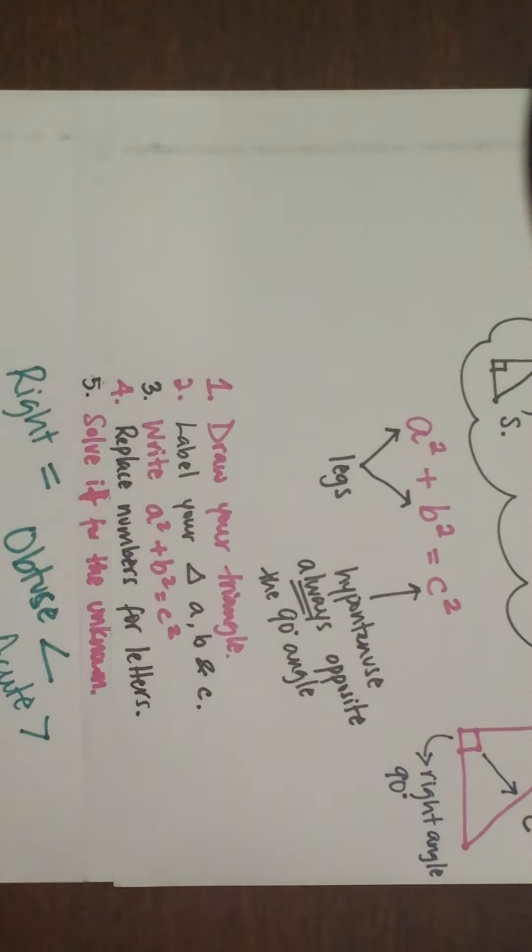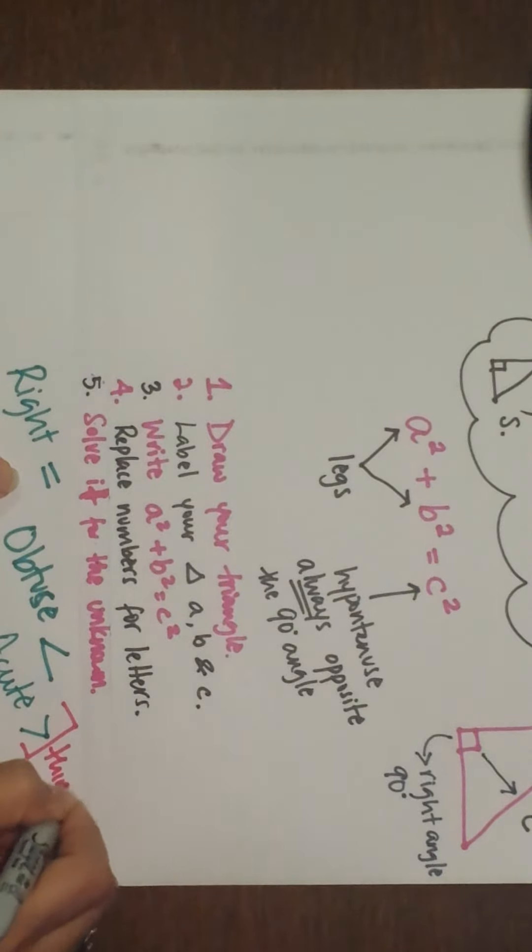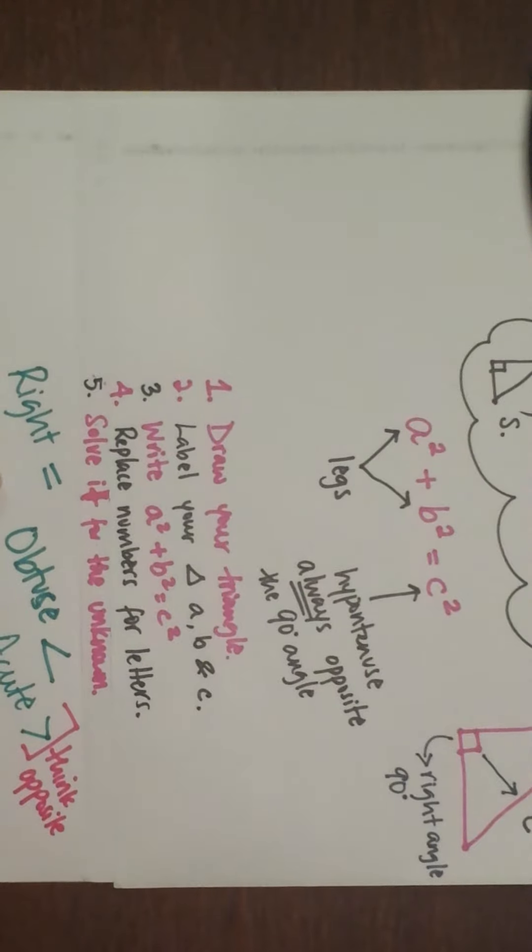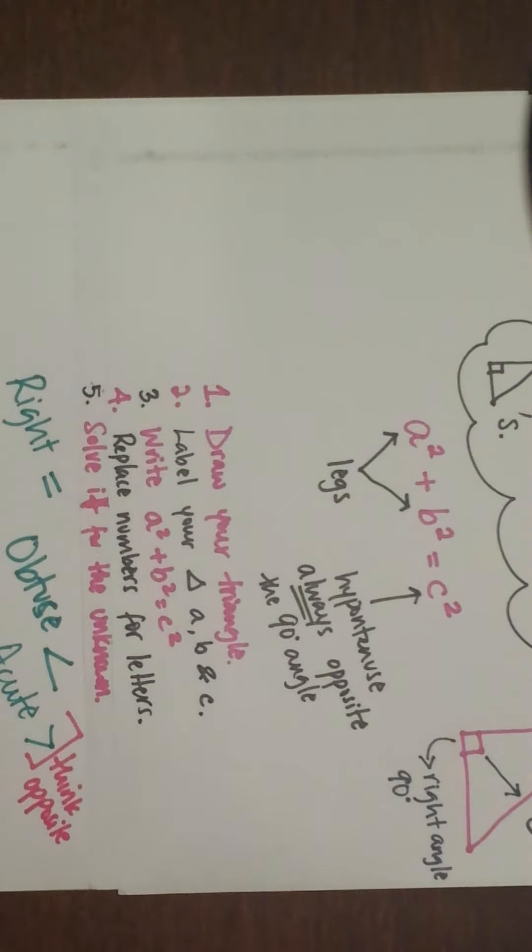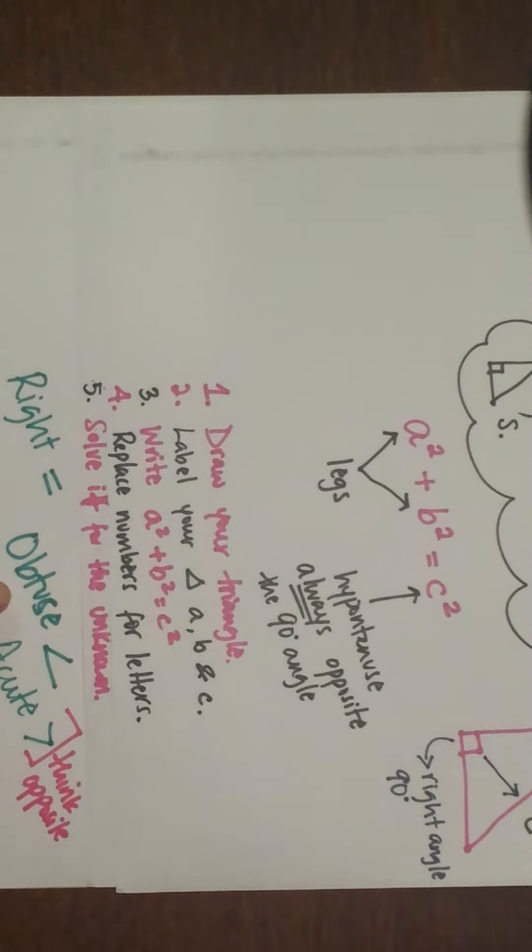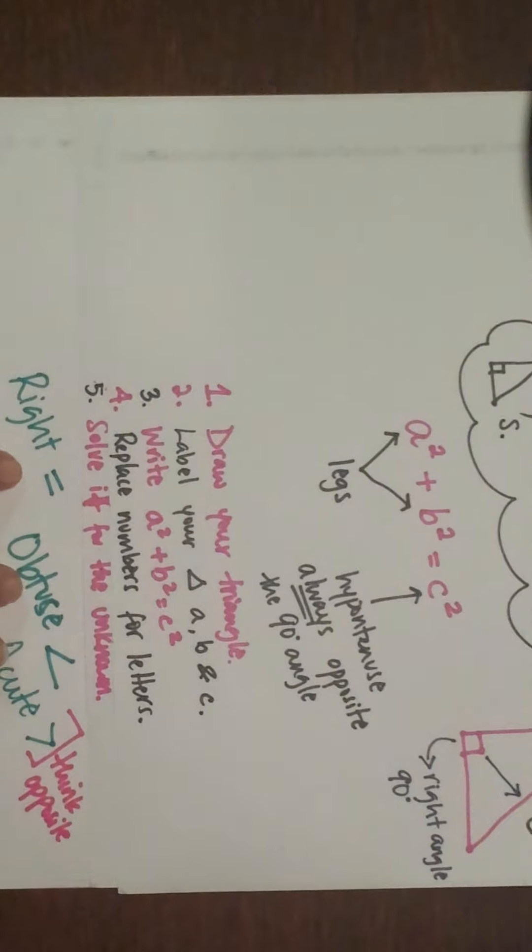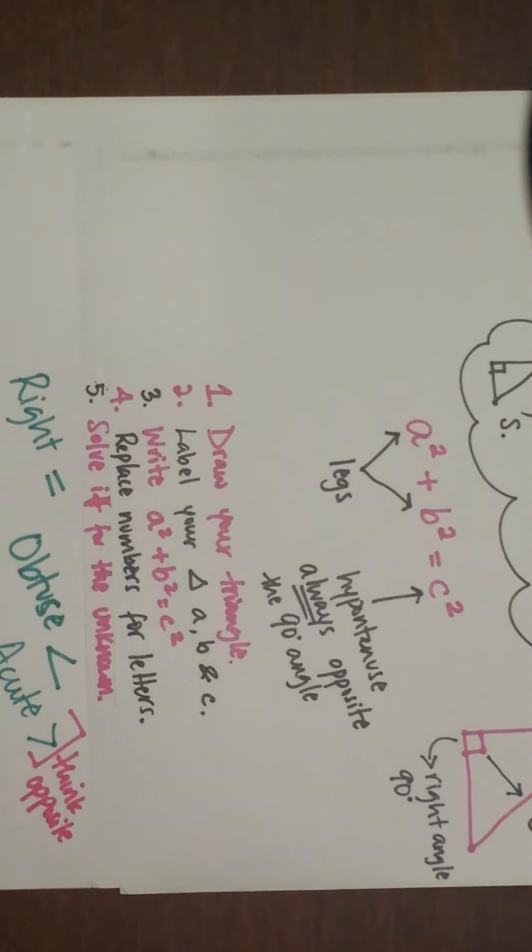When you think of this for what I'm about to teach you, think opposite. Right is equal, obtuse is less than, acute is greater than. Think opposite when you think of obtuse and acute, because an obtuse angle I always think is bigger than 90, acute is less than 90, but think opposite. That's it for your notes.